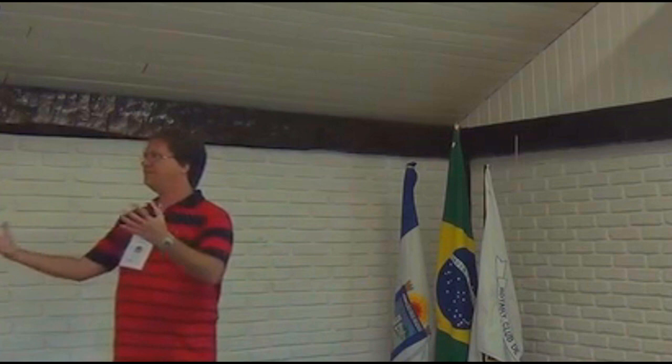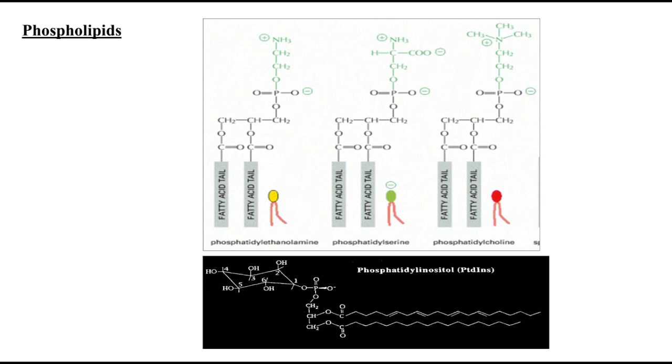So from an inert structure, you can mobilize different signaling molecules that can play different roles in cell signaling — and that is one of the messages I would like to pass to you today. This box shows the three major glycerolipids, phospholipids, found in the plasma membrane: phosphatidylcholine, phosphatidylserine, and phosphatidylethanolamine.